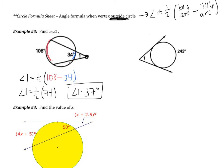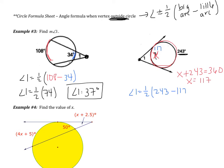Let's look at the second example under example 3. My vertex is still outside the circle, so angle equals one half big arc subtract little arc. My big arc is 243, but I don't have the little arc. I need to think: the whole circle is 360. So x plus 243 equals 360, and if I subtract 243, x equals 117. Now angle 1 equals one half of 243 minus 117, which is one half of 126, giving angle 1 equals 63 degrees.